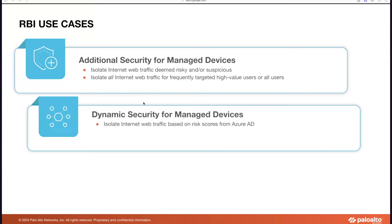There are two different use case buckets from the security perspective for managed devices. First, you can isolate traffic for any risky or suspicious websites. We have also seen C-level executives, who are more prone to attacks given the amount of access they have — you can choose to do isolation for all web traffic for those high-value users. The other use case is dynamic security for managed devices, where you can isolate all web traffic for a user based on risk scores or risky behaviors that users are performing.